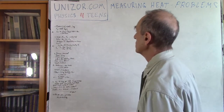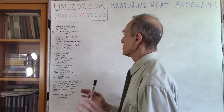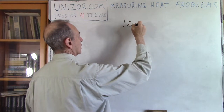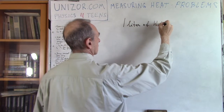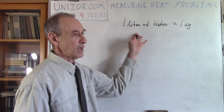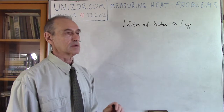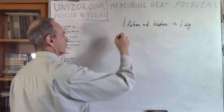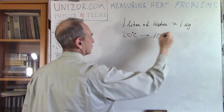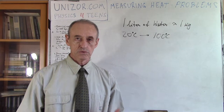So, problems on heat and its measurement. The first problem is extremely easy. You have one liter of water, which is one kilogram in mass. A liter is a volume of water, and we are assuming this is pure water under good conditions, so it's one kilogram. So one kilogram of water, and you would like to heat it up from 20 degrees Celsius to the boiling point, 100 degrees Celsius. The question is, how much heat do you need for this?